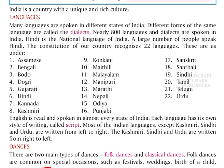Different forms of the same language are called dialects. Nearly 800 languages and dialects are spoken in India. Hindi is the national language of India, and a large number of people speak Hindi. The constitution of our country recognizes 22 languages.